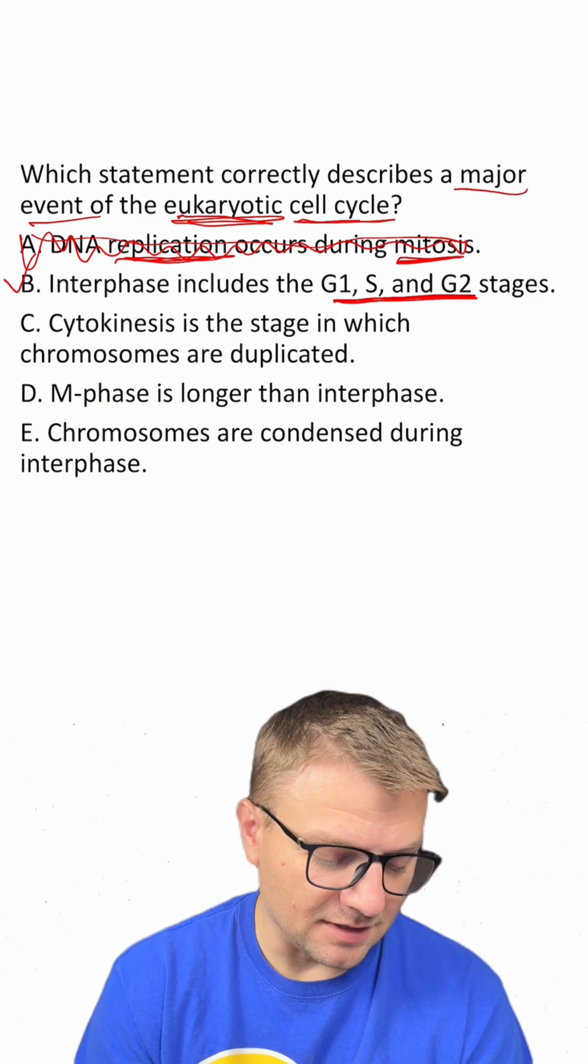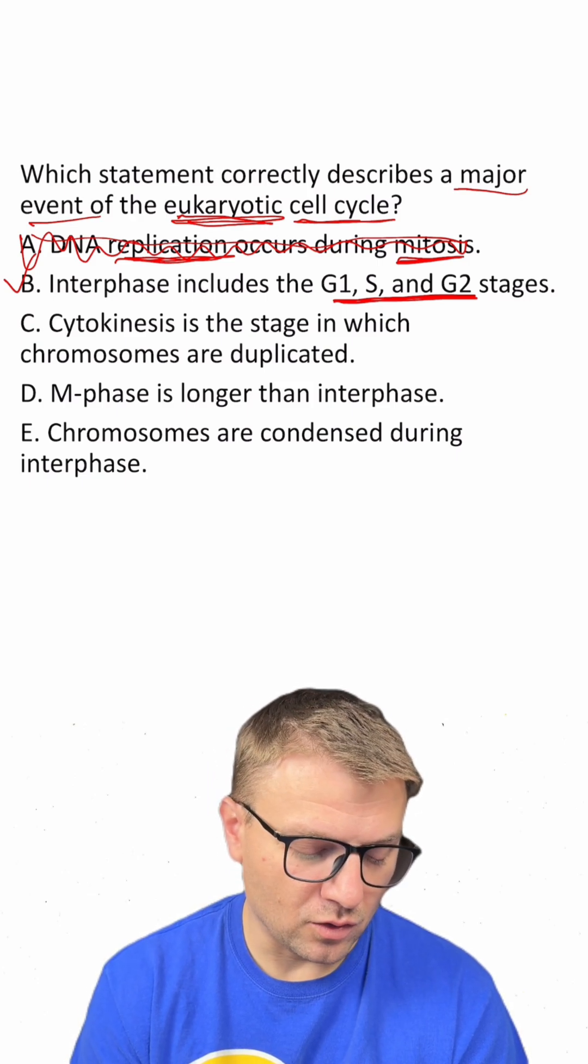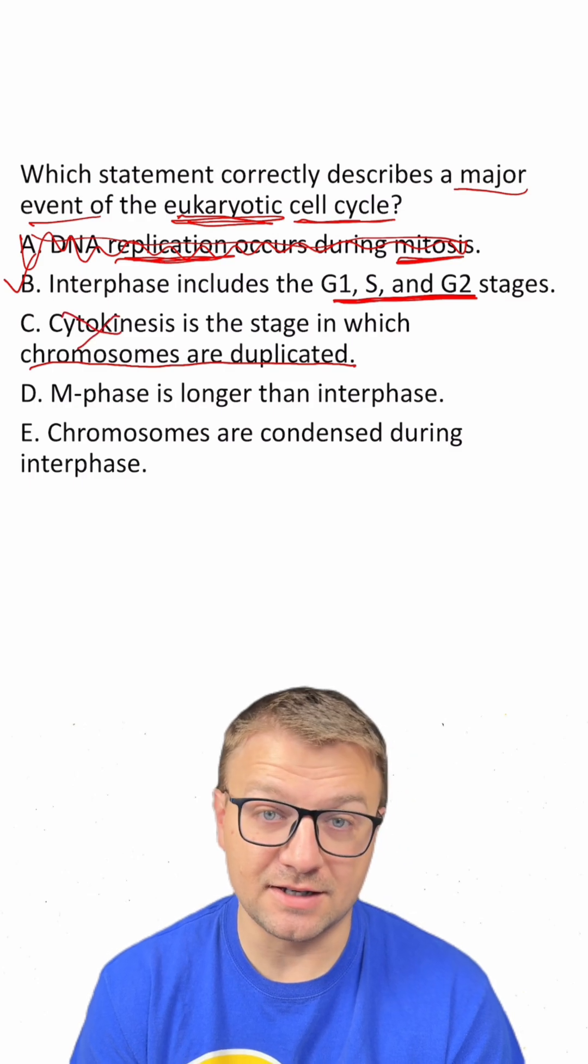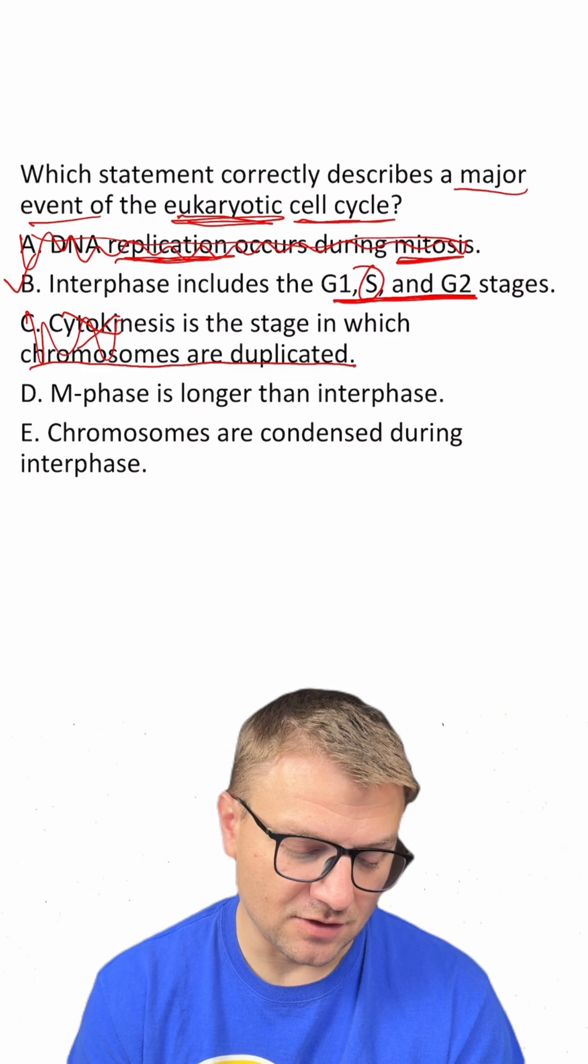C, cytokinesis is the stage in which chromosomes are duplicated. Well, chromosomes duplicating is a part of the cell cycle, but it's not cytokinesis. It's replication, which occurs during the S phase. So C is not right.